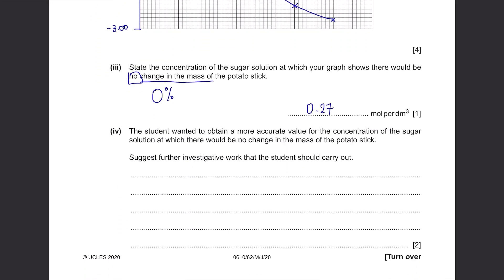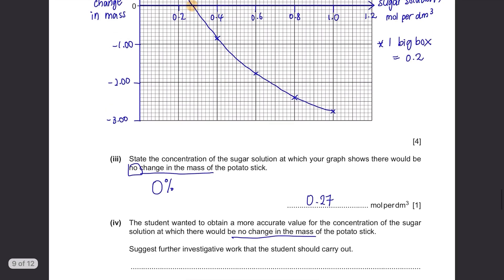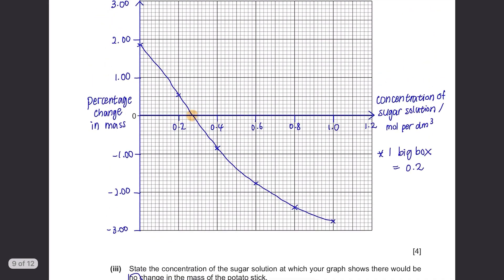Part B(v): The student wanted to obtain a more accurate value for the concentration of the sugar solution at which there would be no change in the mass of the potato stick. Suggest further investigative work that the student should carry out. The student can carry out the investigation again, this time using concentrations at smaller intervals. Since our point was here, the concentrations to be tested can be between 0.2 and 0.3 mol per dm cubed.